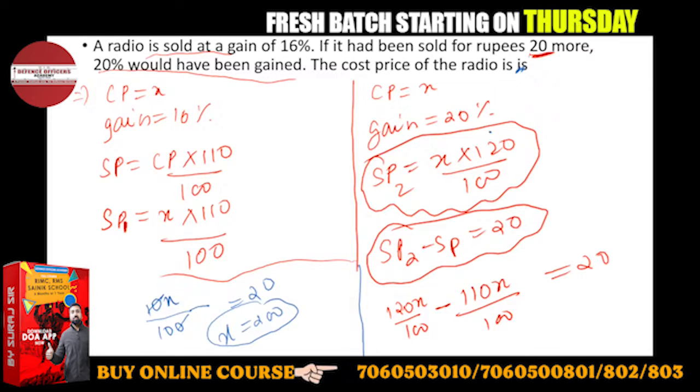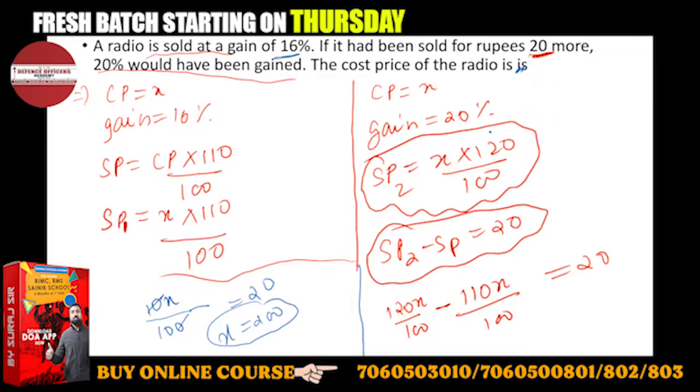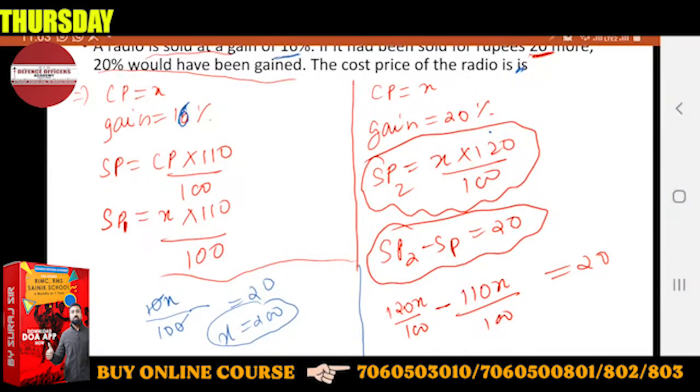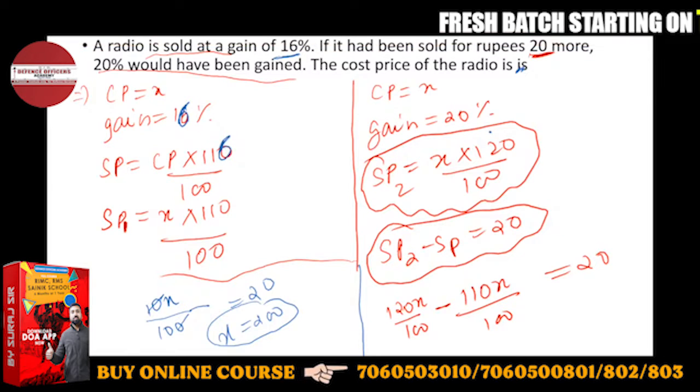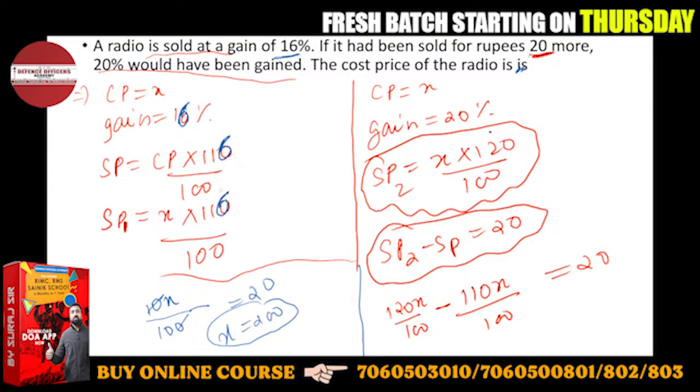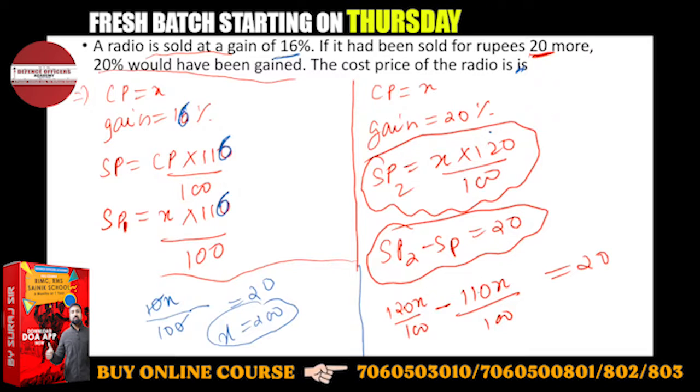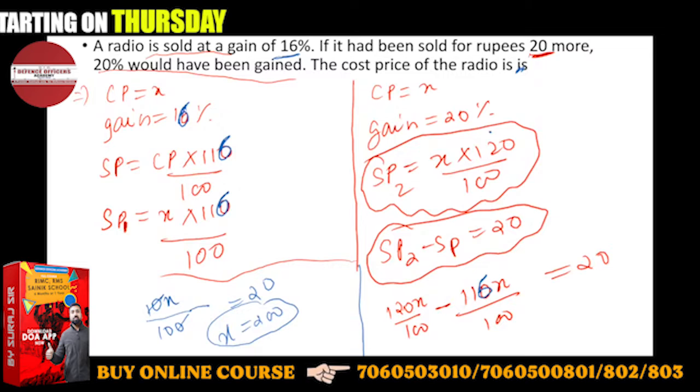Sorry, sorry, I've done it wrong. It is 16% gain, not 10%. So this is going to be 116. So 120 minus 116.